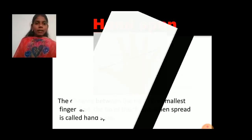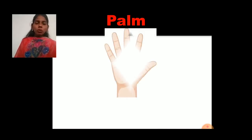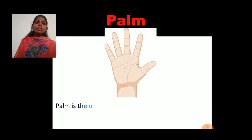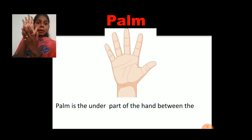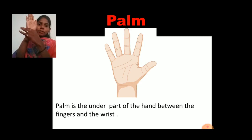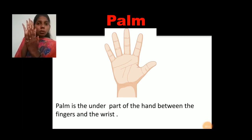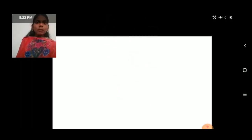The next body part is palm. Palm is the under part of the hand between the fingers and the wrist. This distance — between the fingers and the wrist — is called palm. Using the palm, we can also measure things.